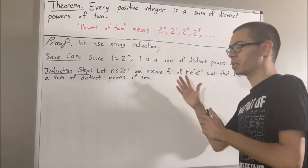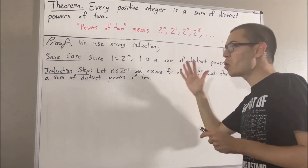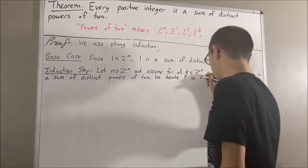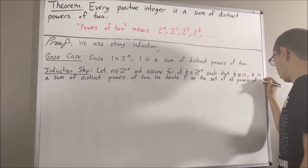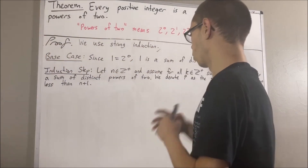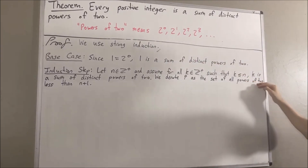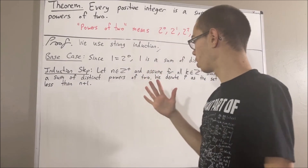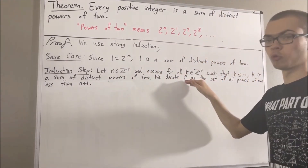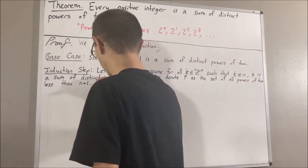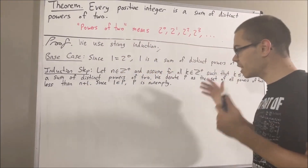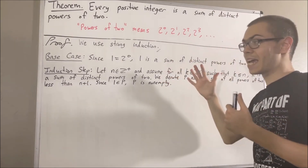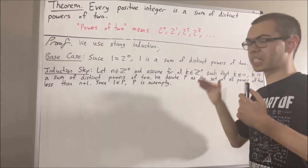We're going to denote p as the set of all powers of two less than n plus one. Well, we know that one is a power of two, and one is less than n plus one, so one is an element of p, which means p is non-empty. In addition, since every element of p is an integer between one and n plus one, p must be finite.